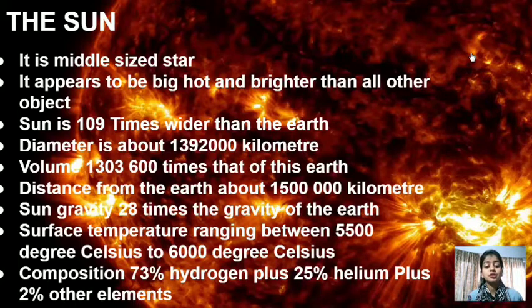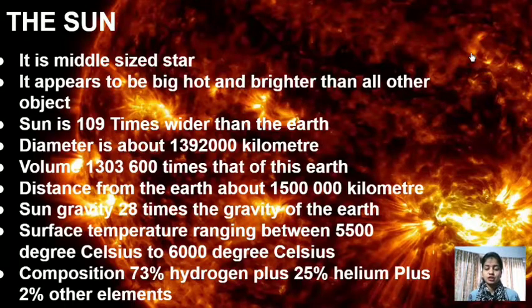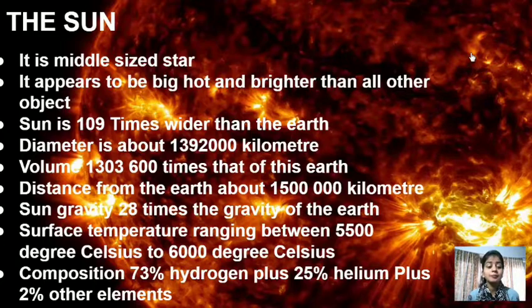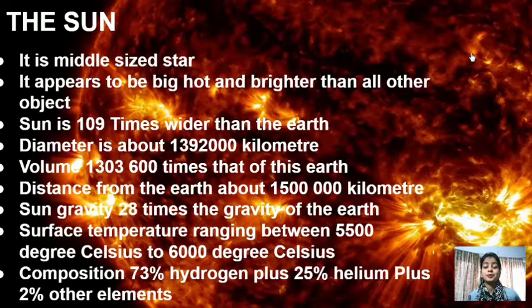The surface temperature of the Sun ranges between 5,500°C to 6,000°C. That is why the Sun emits a yellow color light. As the Sun is a star, its composition is 73% hydrogen, 25% helium and 2% other elements.